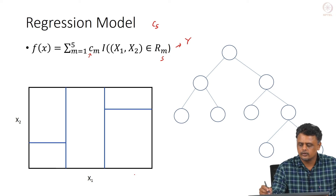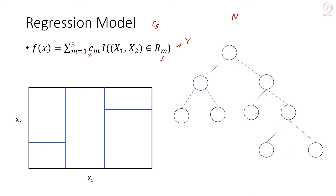Let us see how we can fit this into a tree-like structure. We start with all N data points and consider the first threshold at the top node. Each circle is a node. At the top node we consider X1 ≤ T1, which splits into two. On the left-hand side we look at X2 ≤ T2, giving rise to R1 and R2.